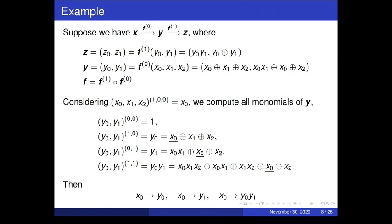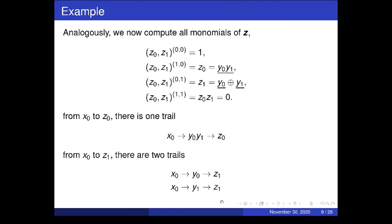To make it clear, we show an example. f is a composite function consisting of g and h, and the ANFs of g and h are given. We consider the trail from the monomial x_0. First, we compute all the monomials of y, and we can find three monomial trails from x_0 to some monomial of y. Similarly, we compute the monomial trails from monomials of y to monomials of z. Finally, we connect them to find three monomial trails from x_0 to some monomial of z.